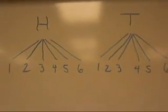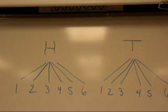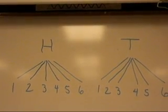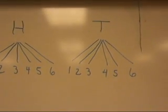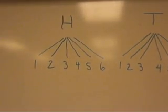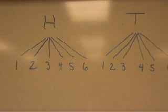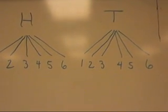My tree diagram will look like this. Heads and tails are my first possibility. And then from each of those, I could roll a 1, a 2, a 3, a 4, a 5, or a 6.